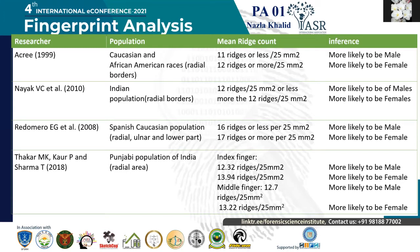Thakar MK also conducted research in 2018 on the Punjabi population of India, considering the radial area for analysis. He found that if the mean ridge density was around 12.32 ridges per 25mm² in index fingers, it is more likely to be male, and if it is 13.94 ridges per 25mm², it is more likely to be female. Thakar MK focused on index and middle fingers due to their high frequency of occurrence at crime scenes, as these two fingers are used while picking up a pen or similar objects. Other researchers extended their studies to all fingers.